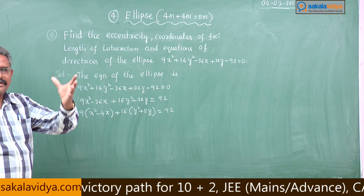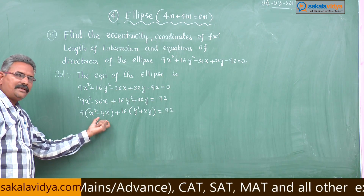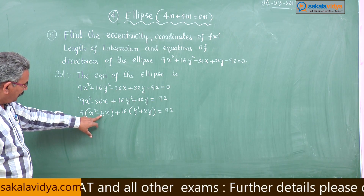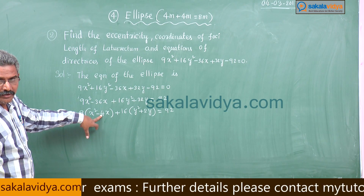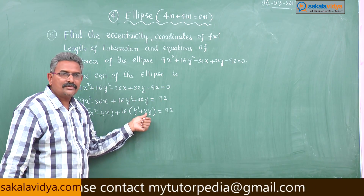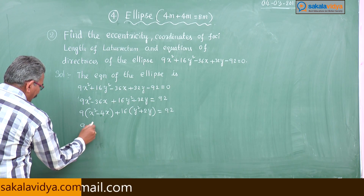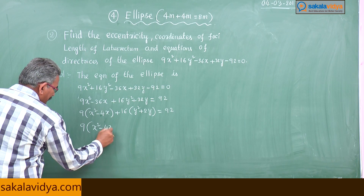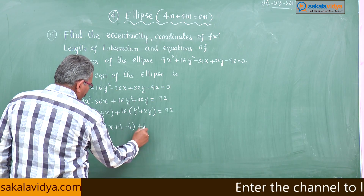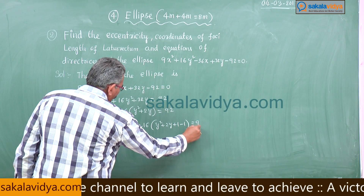Now we need to complete the square. For x² - 4x: half the coefficient of x is 2, so add and subtract 4. For y² + 2y: half the coefficient of y is 1, so add and subtract 1. We get: 9(x² - 4x + 4 - 4) + 16(y² + 2y + 1 - 1) = 92.